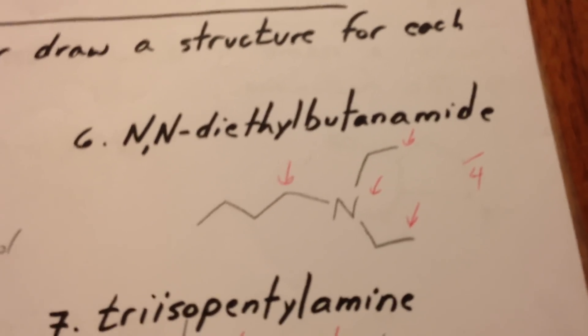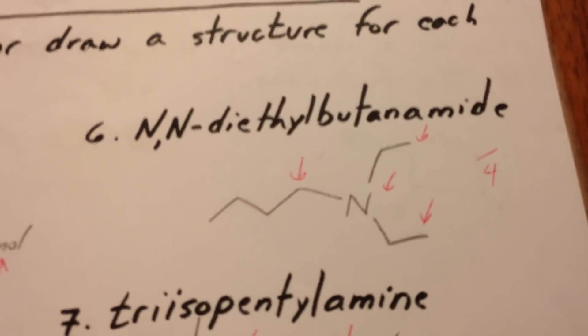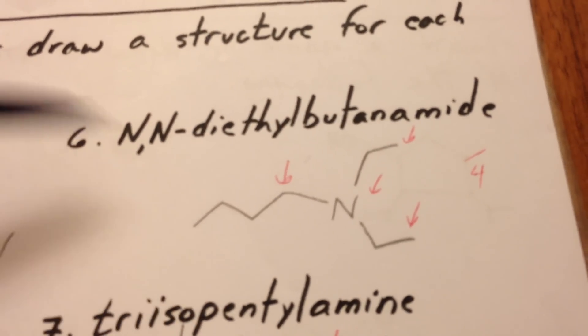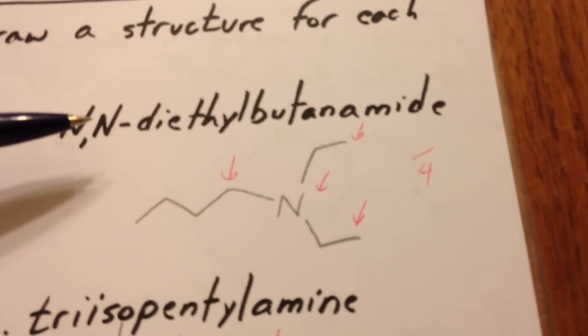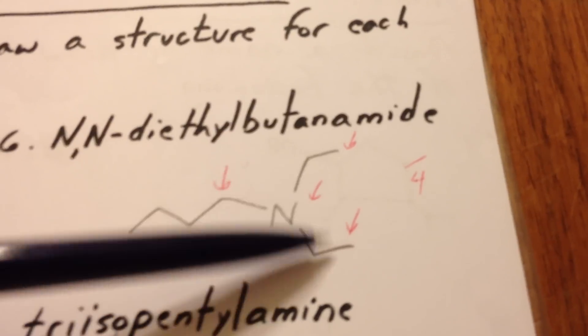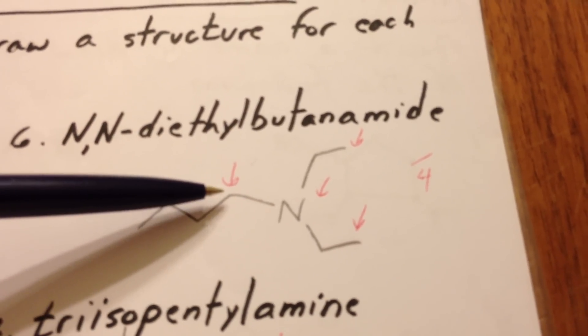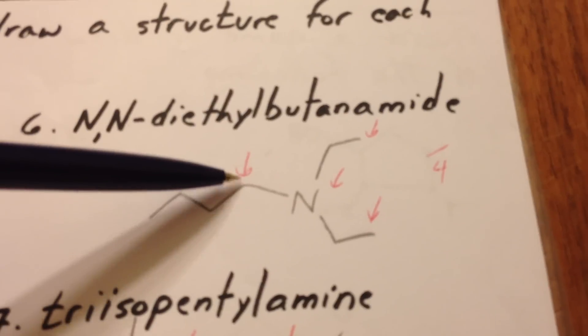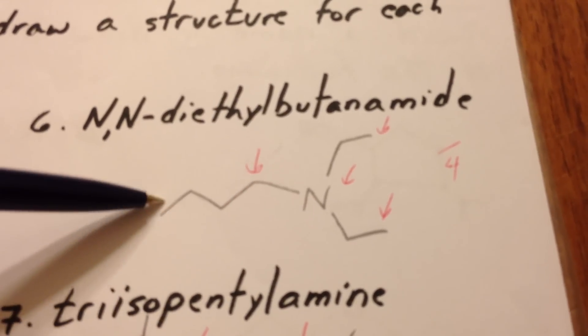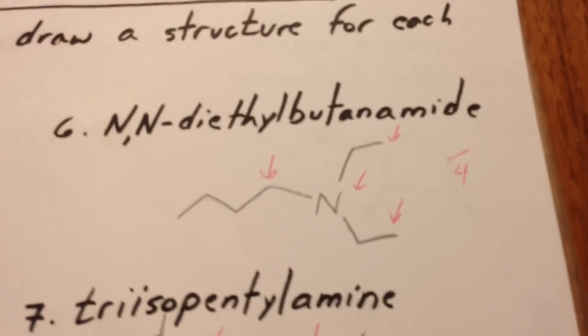The next molecule is an amine. But because not all the groups are the same, we have to call it systematically as an N,N-diethyl. Here are the two ethyl groups. Butanamine. We don't count this as a carbon in bondline notation. The first carbon is here. So 1, 2, 3, 4. There are 4 carbons in the longest chain of the amine.